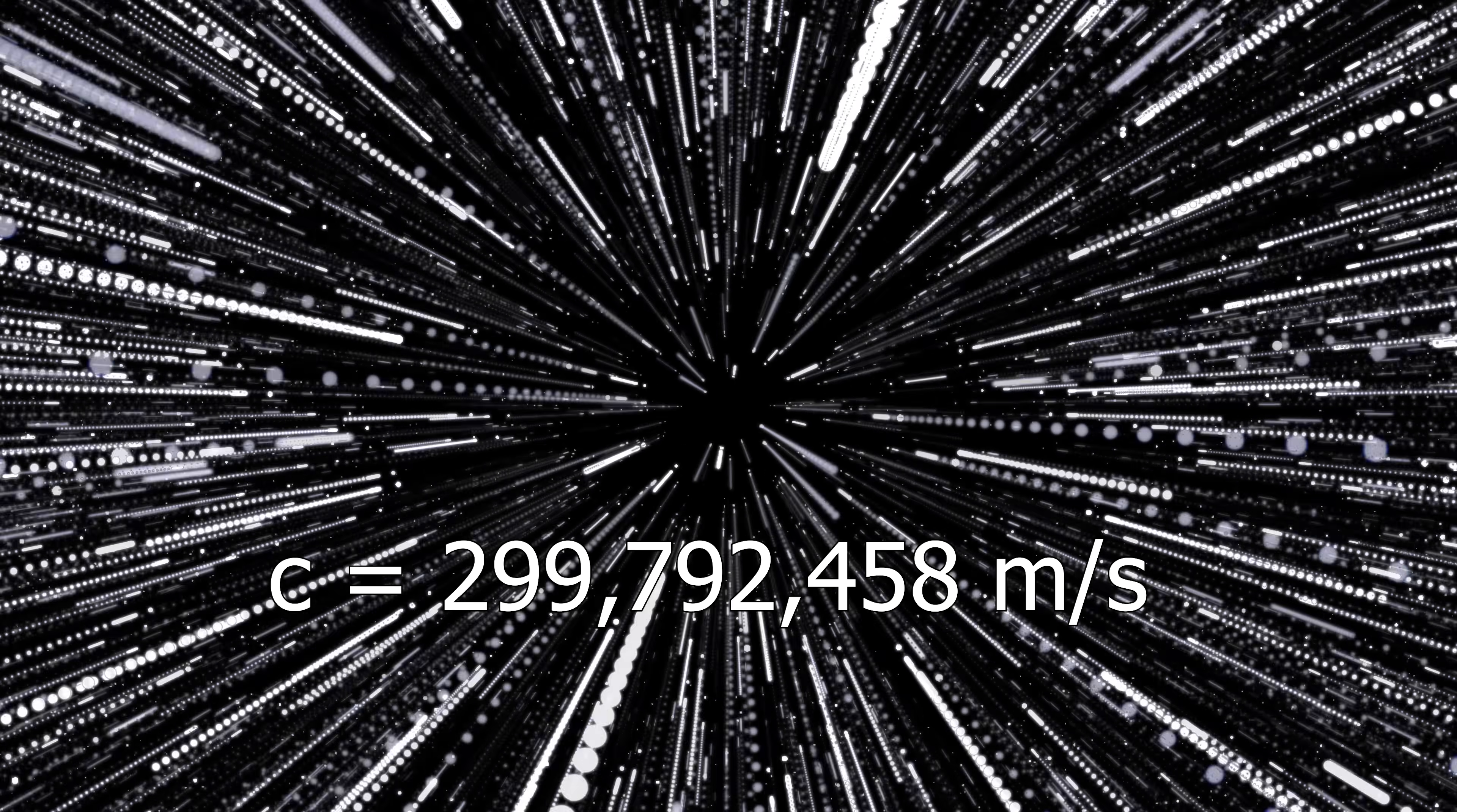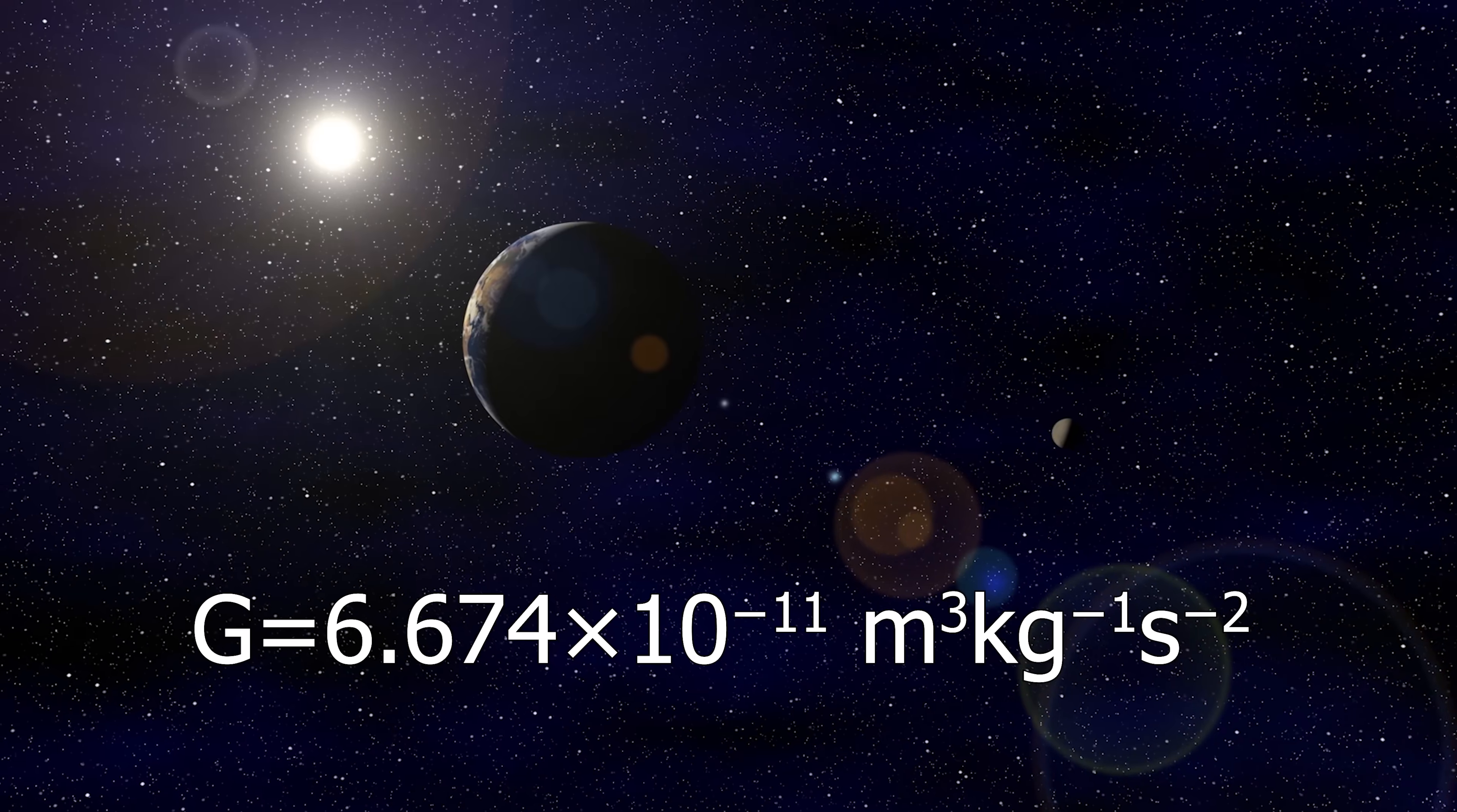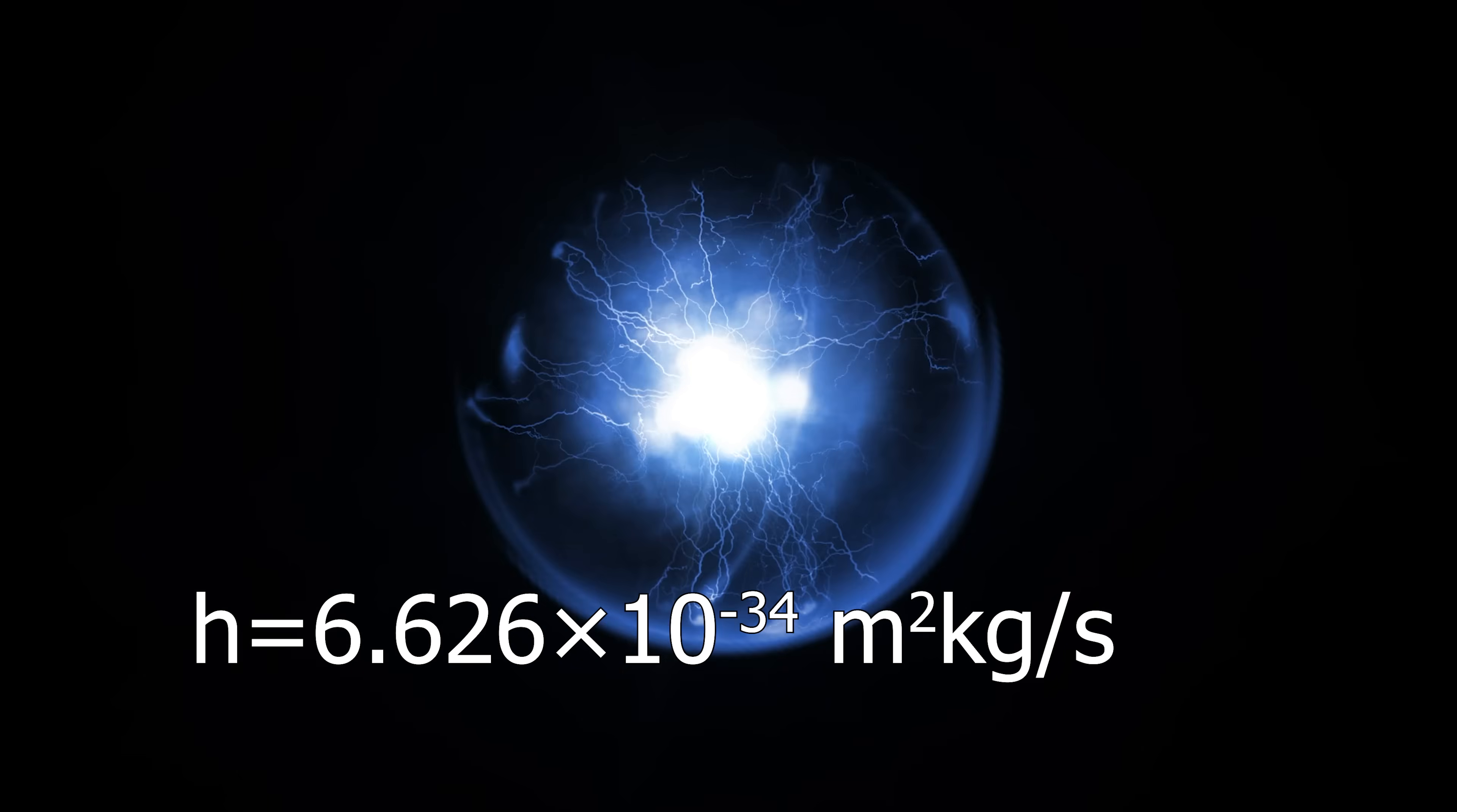There are only three constants that are truly universal in their application to everywhere and everything in the universe. These constants are C, the speed of light, G, the gravitational constant, and H, Planck's constant.